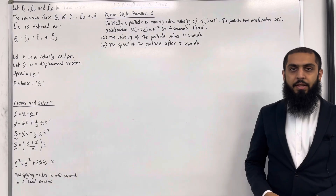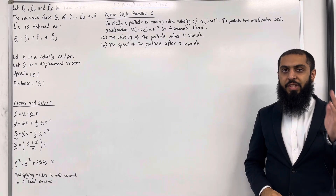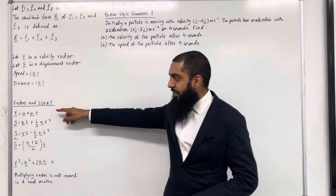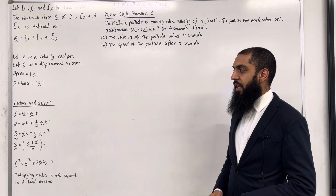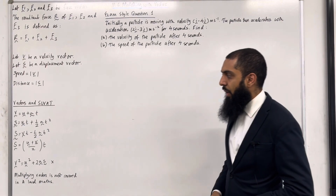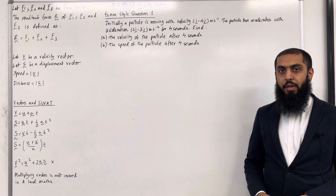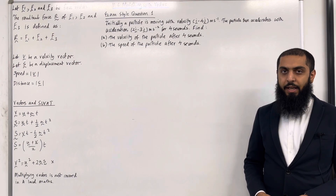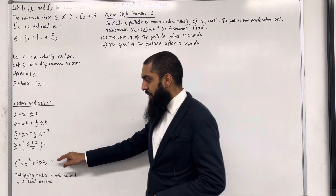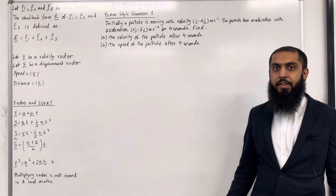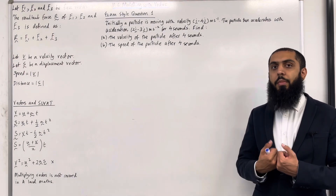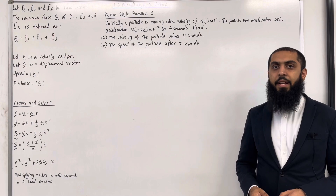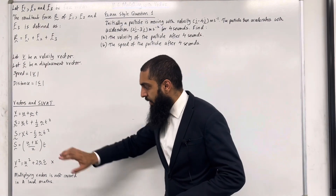Let's move on to vectors and SUVAT. Each of the constant acceleration formulas can be converted from scalar form to vector form. The first one is V equal U plus AT. Then we have S equal UT plus one half AT squared, S equal VT minus one half AT squared, and S equal (U plus V) over 2 multiplied by time T. Note that V squared equal U squared plus 2AS will not be applied, because we don't know how to multiply vectors — this is not covered in the A-level Maths specification for AQA/Edexcel. So we can disregard this constant acceleration formula.